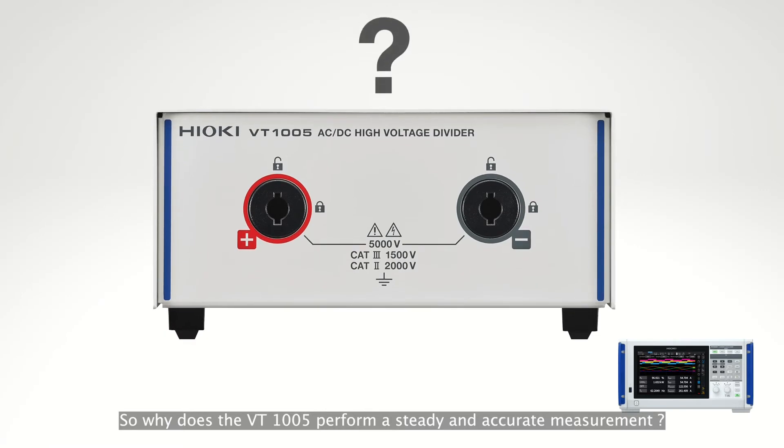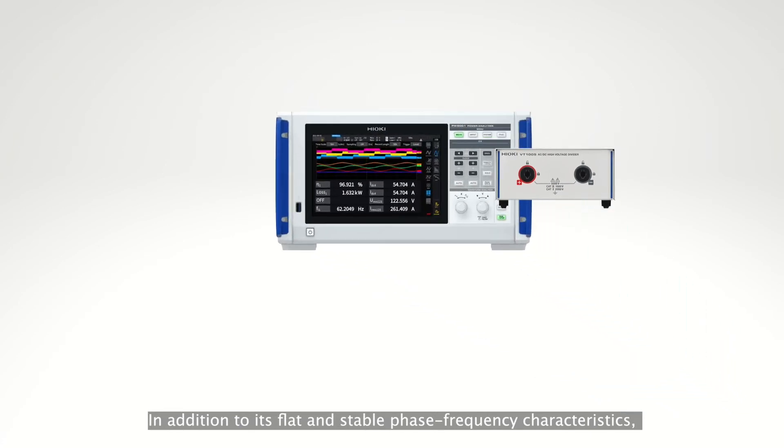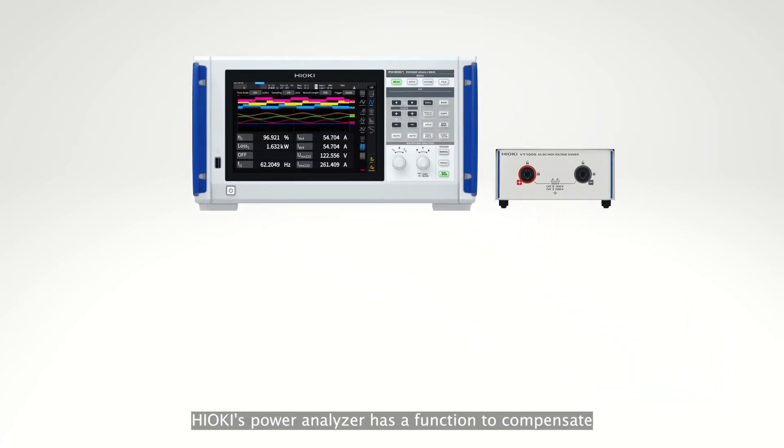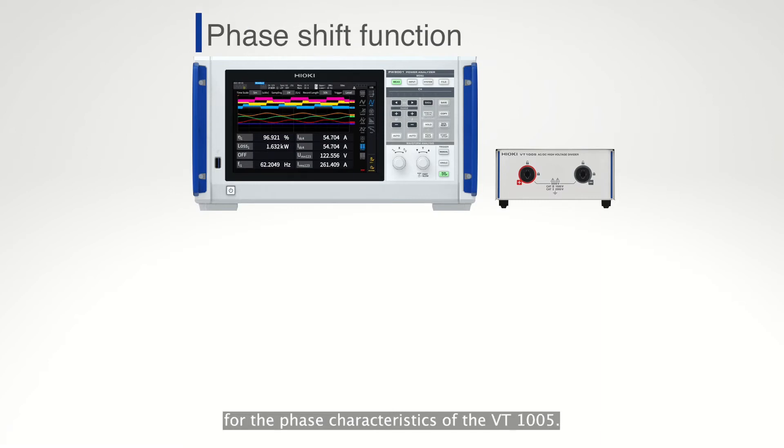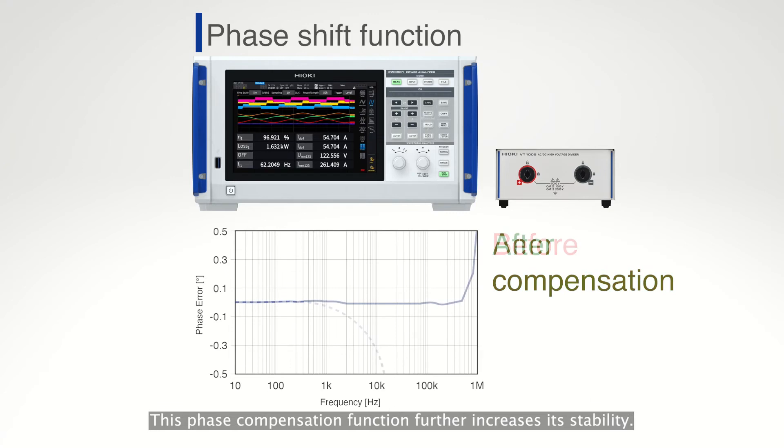So, why does the VT1005 perform a steady and accurate measurement? In addition to its flat and stable phase frequency characteristics, Hioki's power analyzer has a function to compensate for the phase characteristics of the VT1005. This phase compensation function further increases its stability.